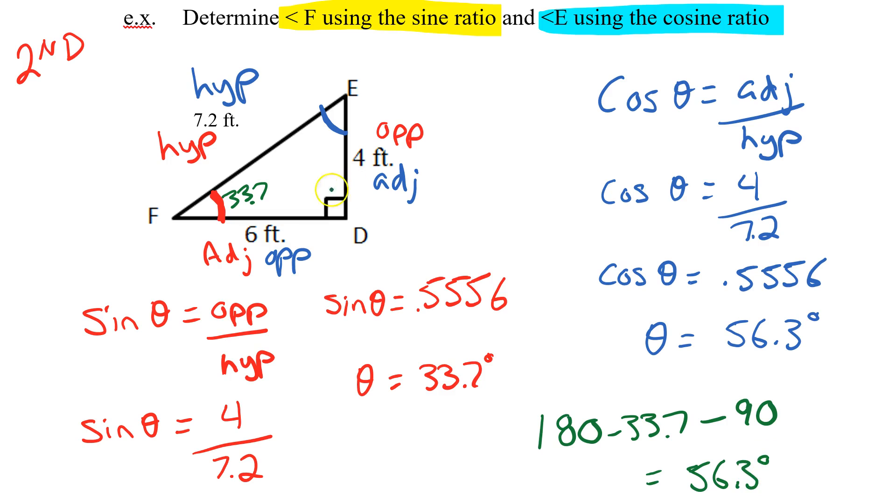So when you have two angles subtracting them both from 180 will give you the third. Now the question did ask for us to use the cosine ratio so we would have to show all this work but a little check for us as well.